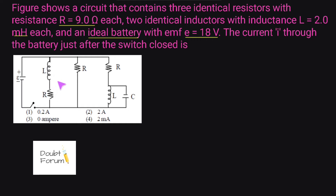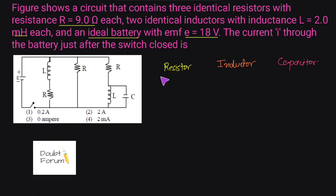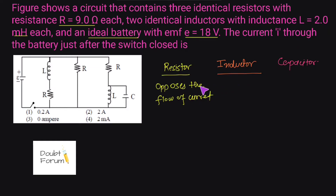Before solving this question, I would like to explain a little about resistors, inductors, and capacitors, as these are all circuit elements. The main feature of a resistor is that it opposes the flow of current. The inductor does not oppose the flow of current — what it opposes is the rate of change of current. If current flows at a constant magnitude, the inductor will not provide any hurdles.